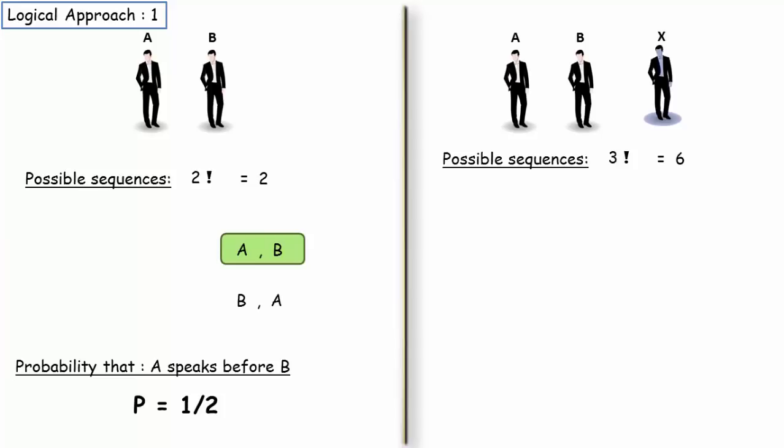Let's compare these two cases side by side. When there is only A and B, total number of sequences are 2 and the number of valid sequences is 1. Now, the person X joins the arrangement but his order doesn't matter. So, he can speak before A or between A and B or after B. This gives us 3 valid cases.